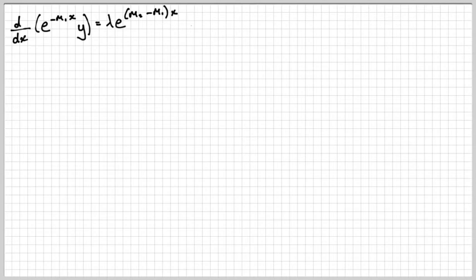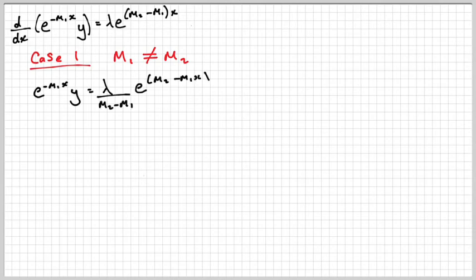Now let's consider Case 1 where m1 is not equal to m2 — in other words, the roots of the auxiliary equation are distinct. I can integrate each side with respect to x directly.